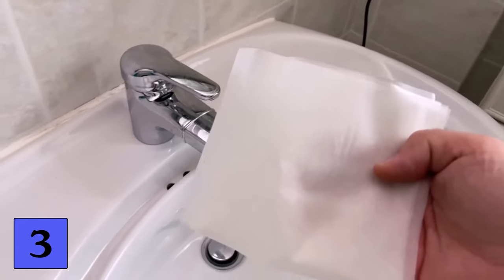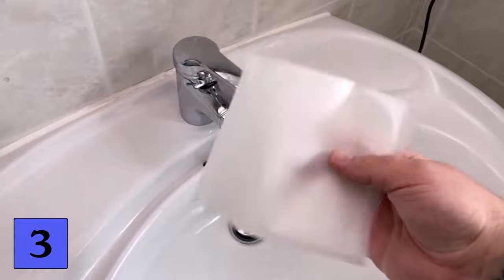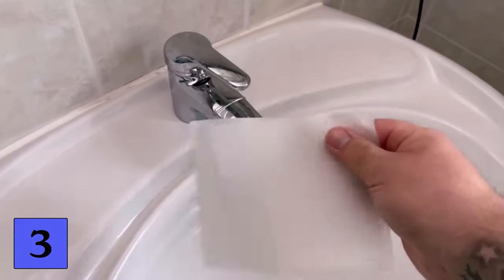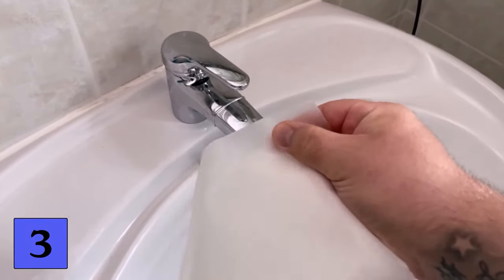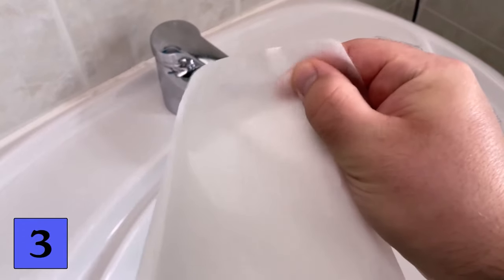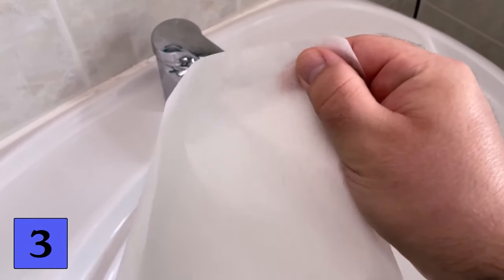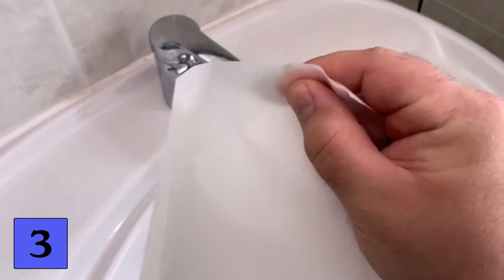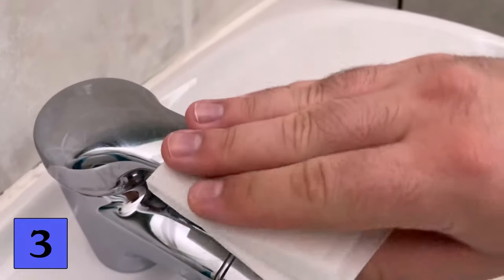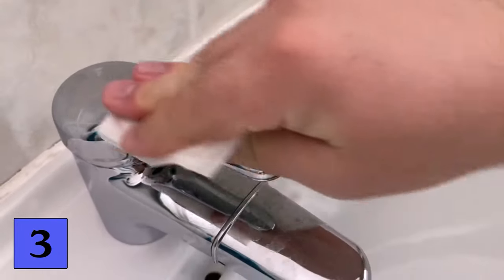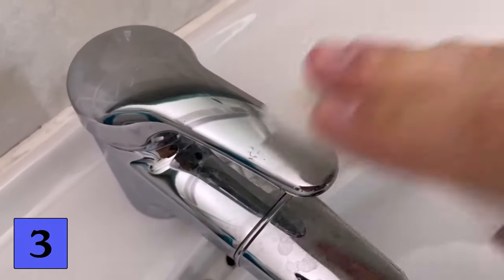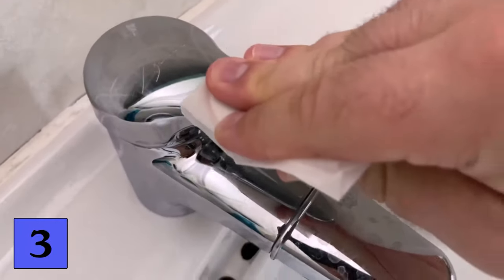This is because of the surface coating of the baking paper, which you have certainly felt when you rub it back and forth between your fingers. We now take a piece of this baking paper and start rubbing it over the tap. Just like that, without water. After a short time you will see that you can remove existing limescale stains wonderfully. The water stains are no longer visible on the tap.